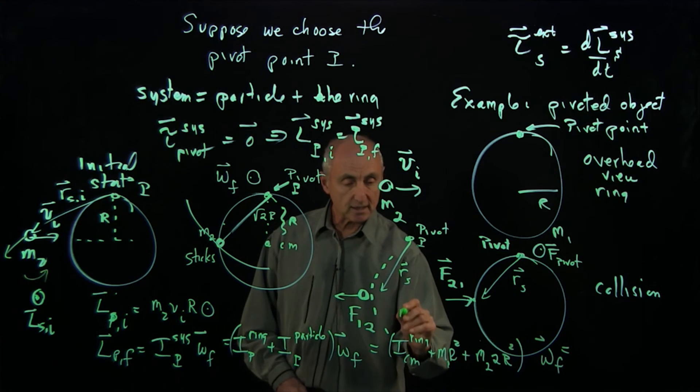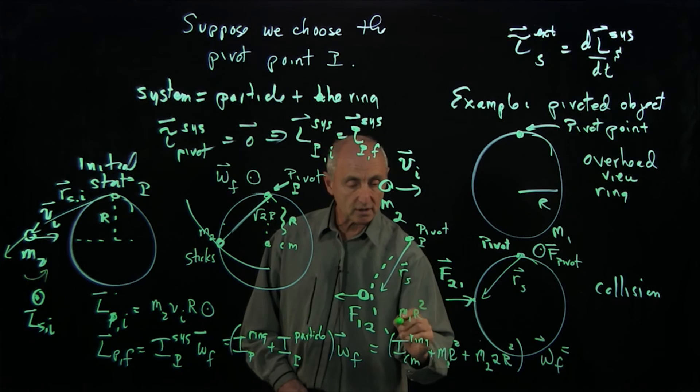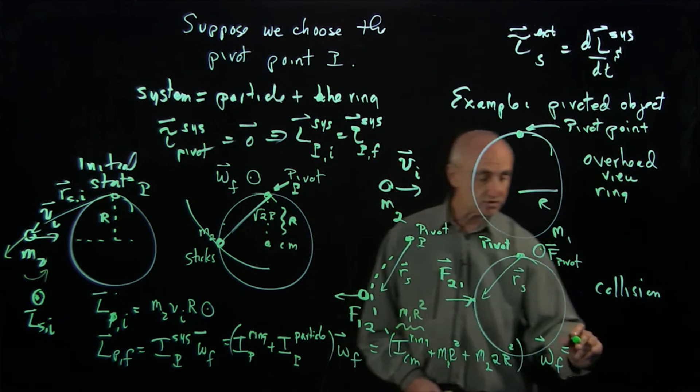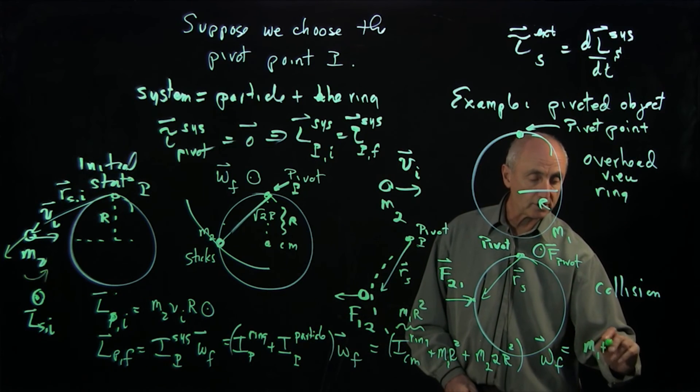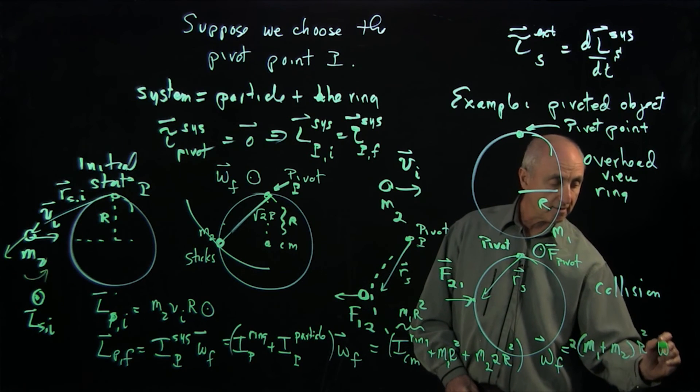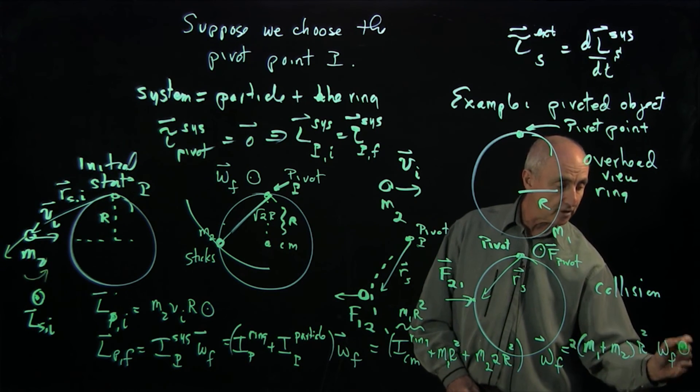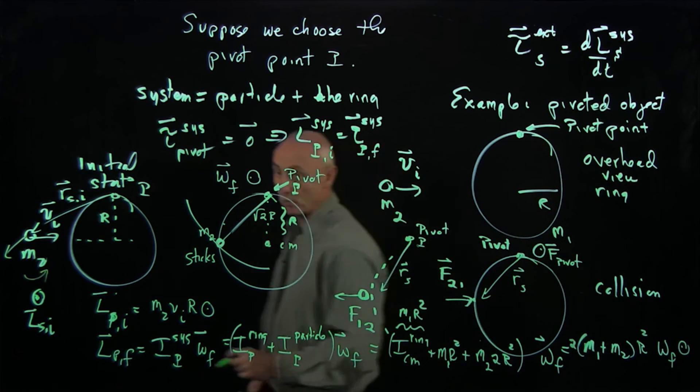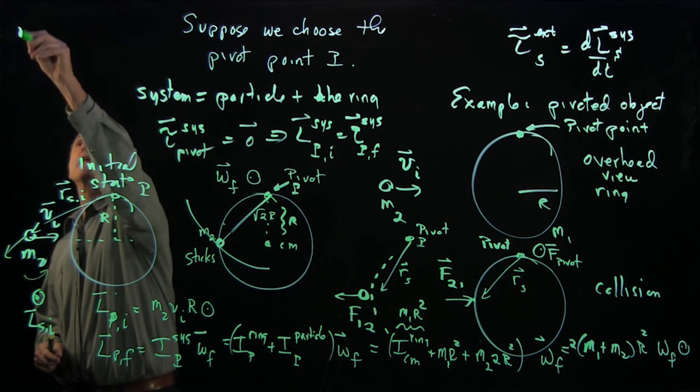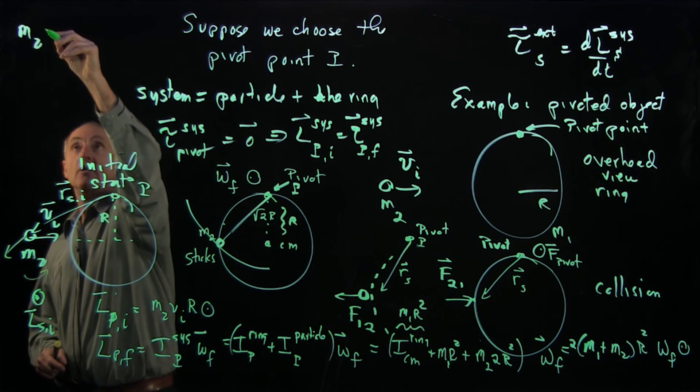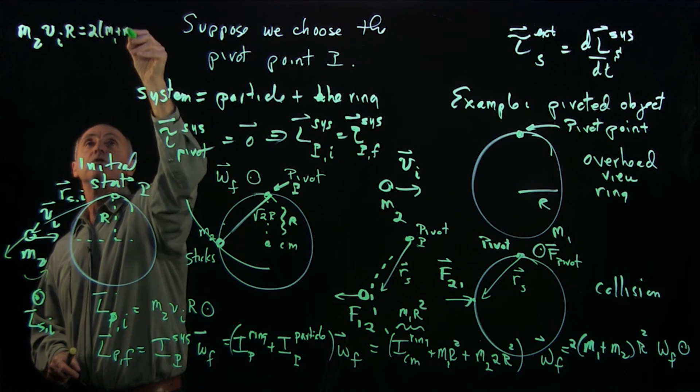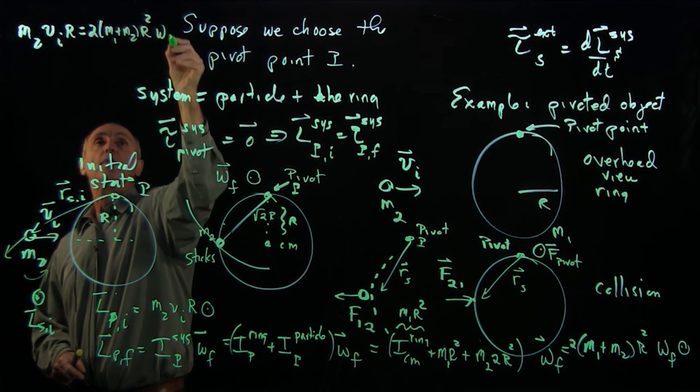The moment of inertia of the ring is M1R squared, about the center of mass. We have a factor 2, we have another factor of 2, and so we get M1 plus M2 times a factor 2R squared, omega final, which we can call omega F pointing out of the board. And so now we have an angular momentum condition, which is that M2VIR equals 2(M1 plus M2)R squared, omega final.